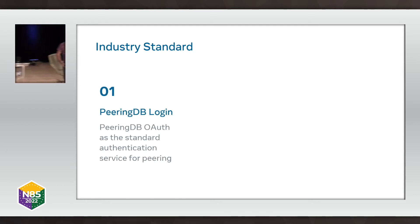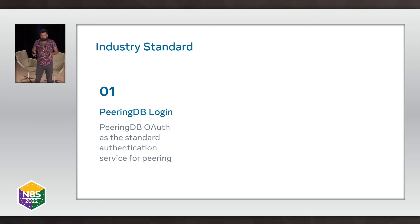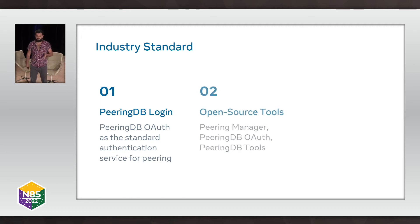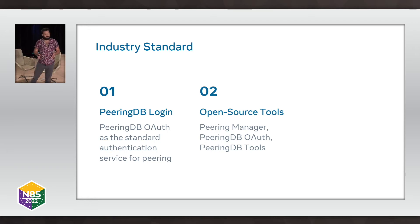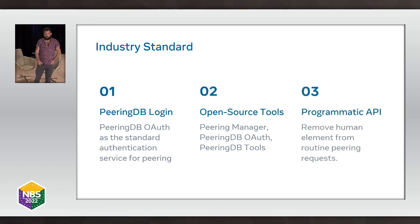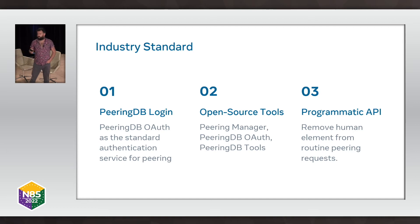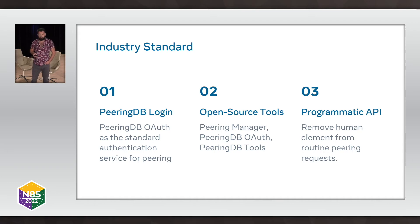Thinking about the industry standard piece — we're keen to understand and we already use PeeringDB heavily. You need a PeeringDB record to peer with Meta, and now you can also use the OAuth. It'd be great to make this the standard for authentication for peering services. We're also keen to use open source tools — Peering Manager is something that would fit into what we're talking about. Looking forward to the future, we'd really like to have an API in a programmatic way so we can remove human interaction entirely, making really simple peering requests machine-to-machine. If this is something you're interested in helping develop, please talk to us now or at the Peering Coordination Forum.